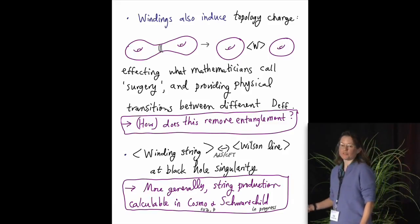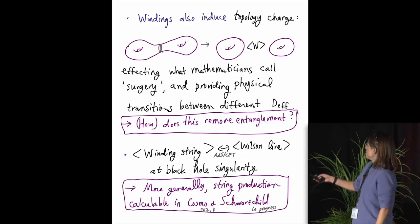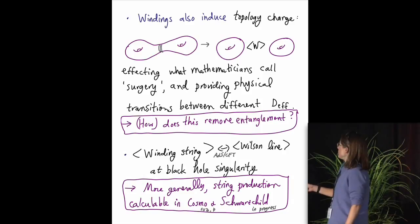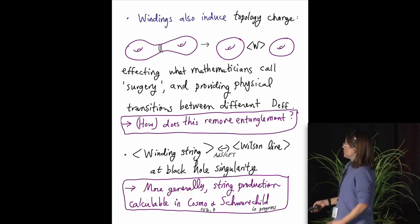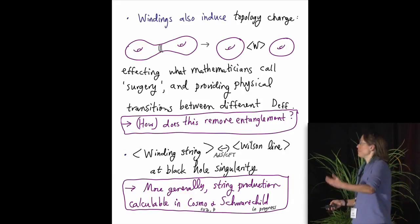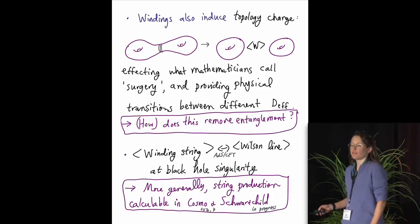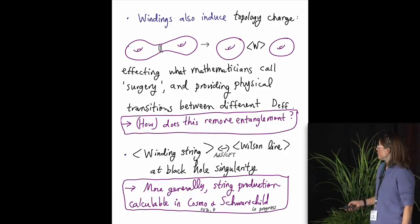Perturbative string theory also does other interesting things. It leads to topology-changing transitions, such as this simple one where a two-hole doughnut splits in half. And this, again, is a mathematical thing. It's a physics realization of what mathematicians would call surgery. It provides transitions between different numbers of degrees of freedom. And in the modern view, geometry is related to entanglement. So this physical process that we understand just at the level of perturbative string theory to make this transition should somehow remove entanglement in the system. And that would be an interesting thing to understand.